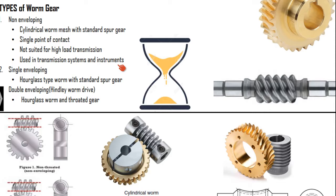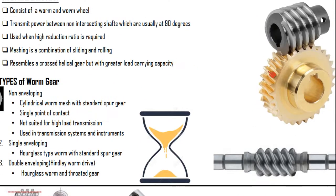The single-enveloping and double-enveloping types should be understood properly because they are based upon the way they are constructed. Basically, they have an hourglass type of construction. The shape of the worm is like an hourglass. In a single-enveloping type, you have an hourglass-type worm with a standard spur gear. For double-enveloping, you have this hourglass worm and a throated gear. If you closely look at the spur gear, there is a slight curve given to the face of the gear — this slight curve is called the envelope, the throated gear.